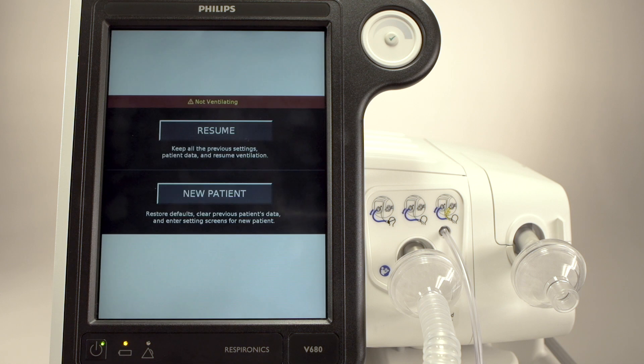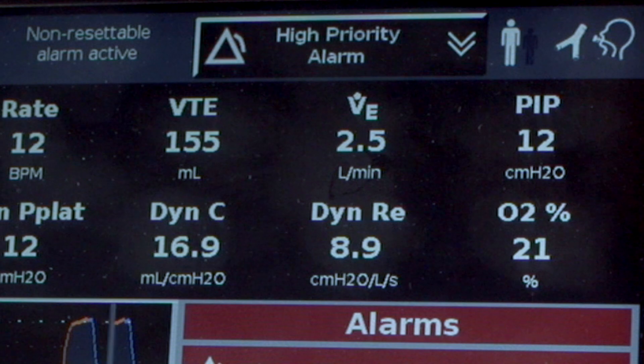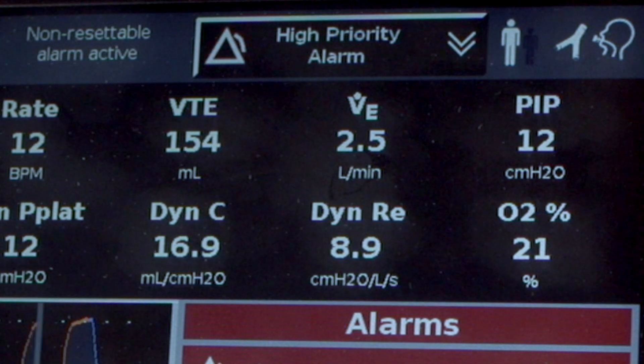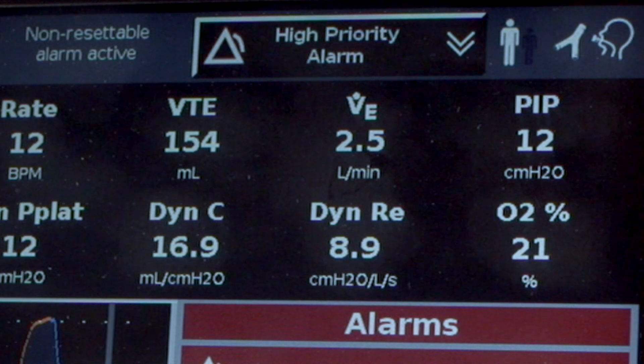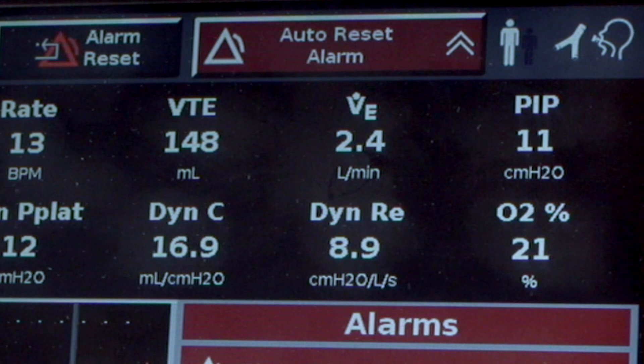This is a good time to mention that V680 has an escalating audible alarm feature that will get progressively louder if a clinician does not respond promptly to a high-priority alarm. The audible alarm will escalate to the maximum decibel level, regardless of where the alarm volume was set. This is a unique safety feature.